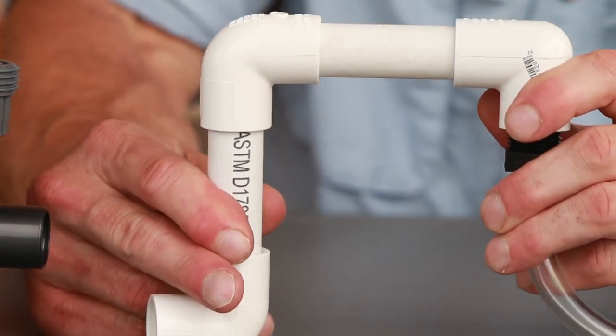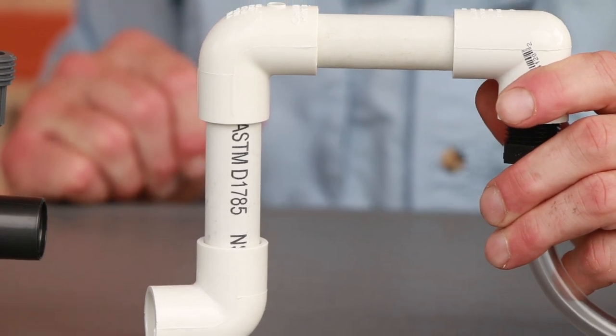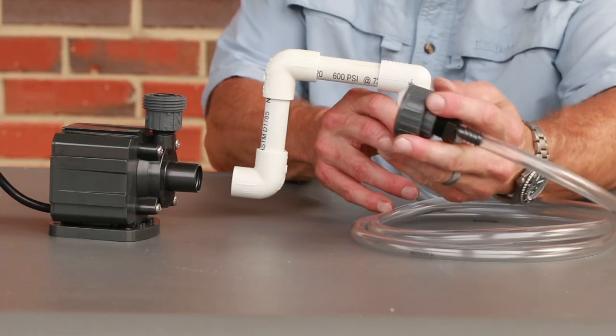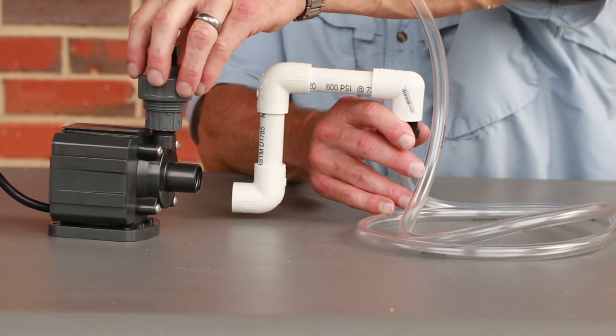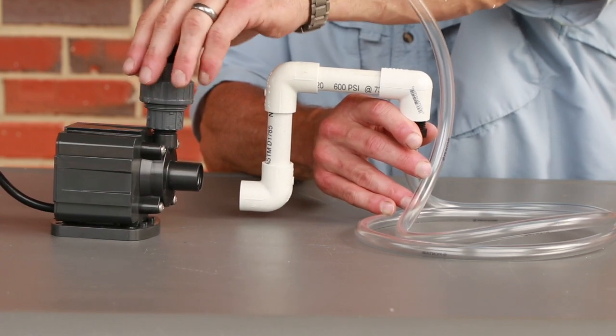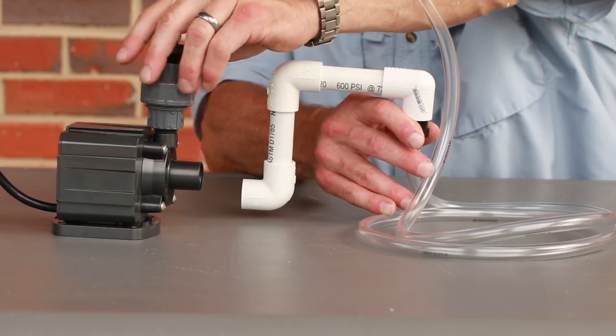Having this U-shaped configuration on the end of the grow bed water delivery system makes it possible to hang it over the side of the pre-filter you'll build next. Connect the two halves of the union fitting together next to the pump.